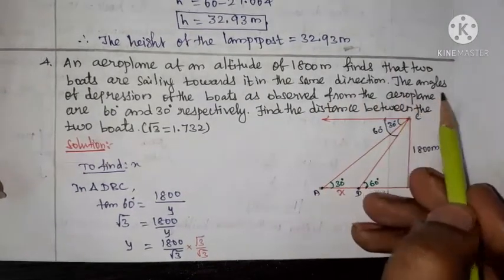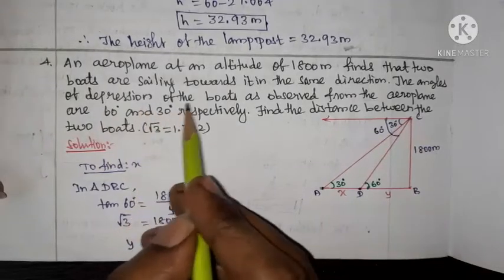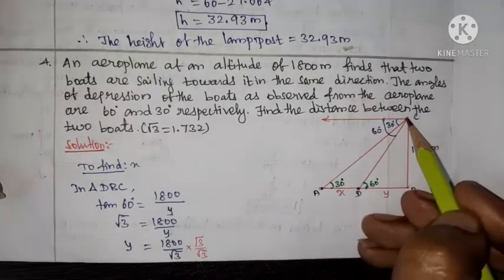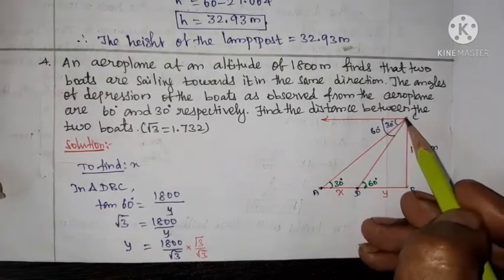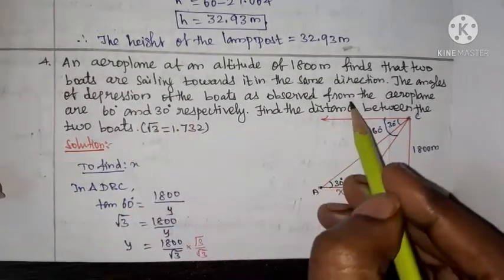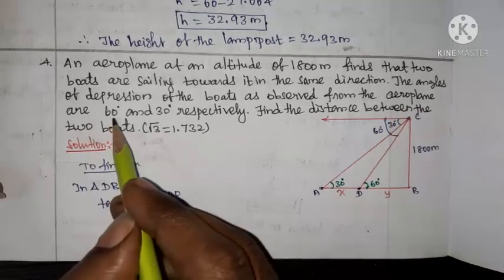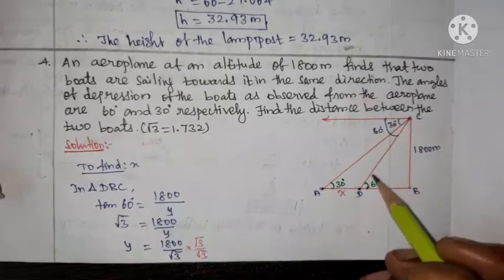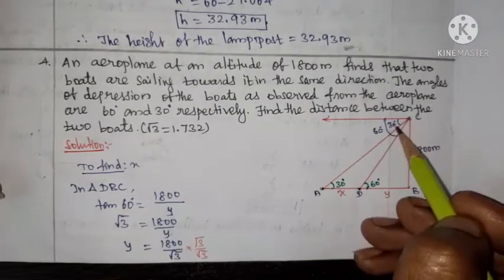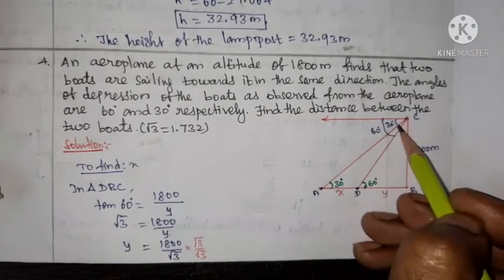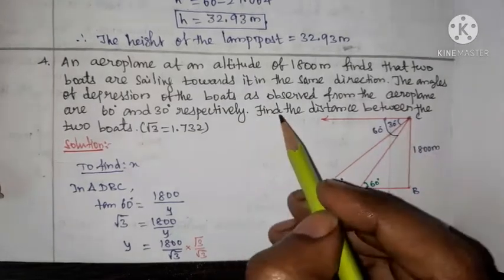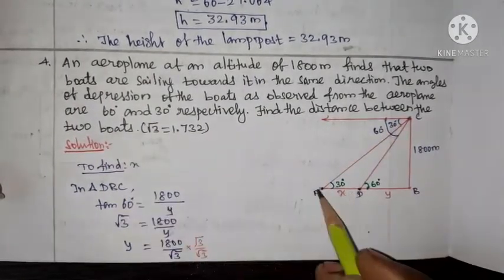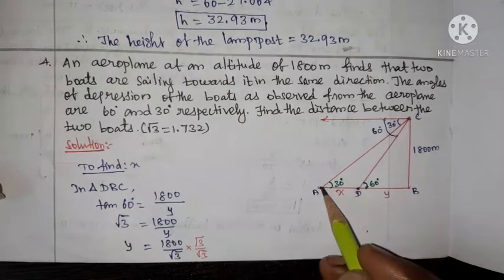The angles of depression of the boats as observed from the aeroplane are 60 degrees and 30 degrees respectively. Find the distance between the two boats.